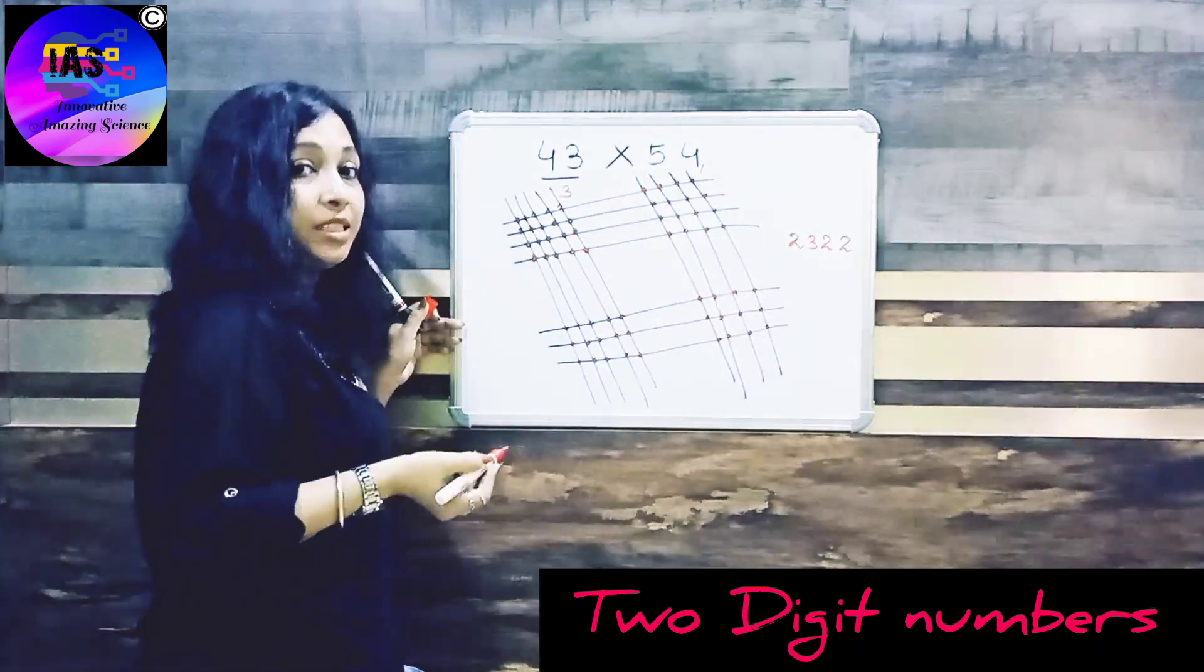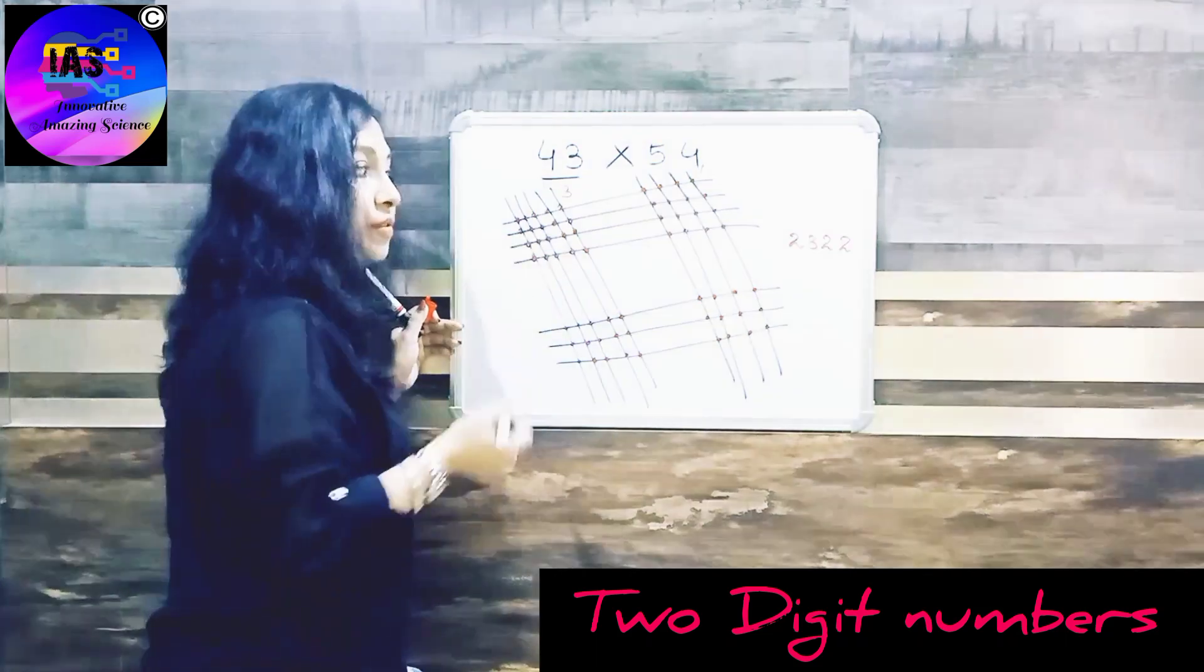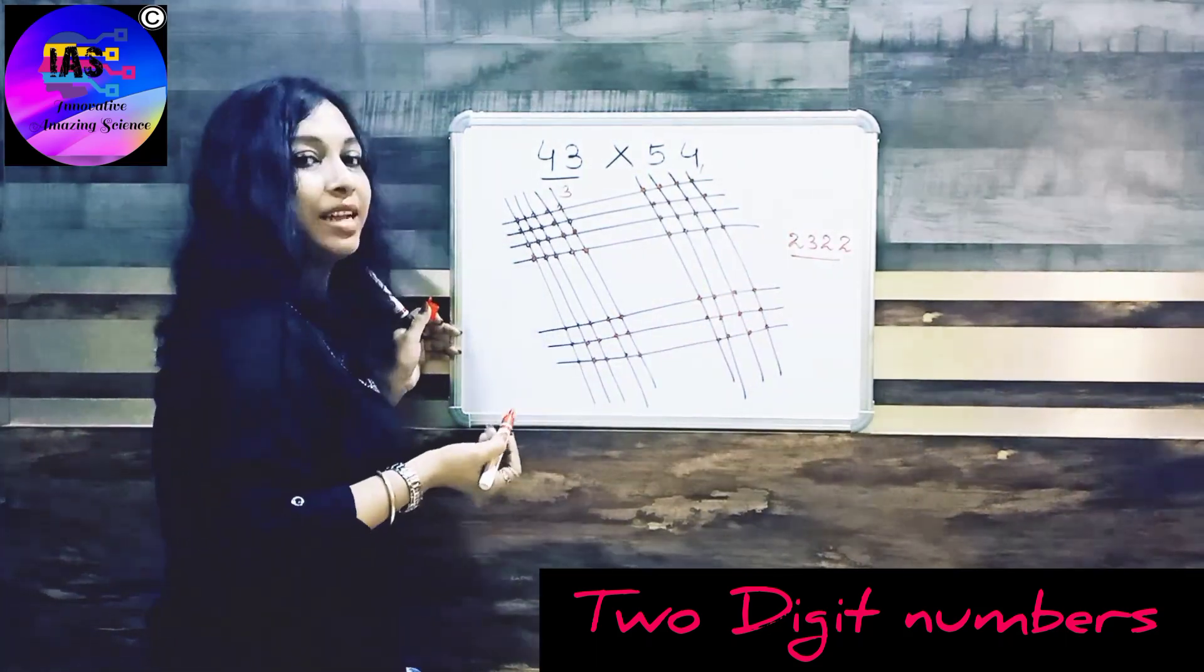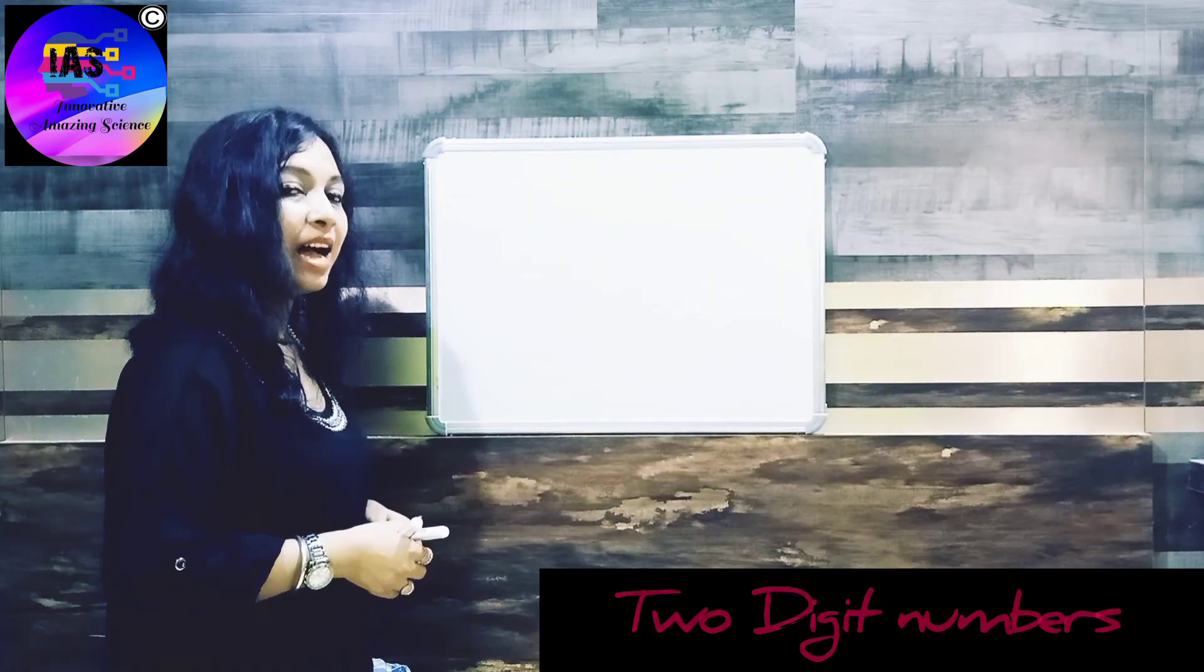So if you multiply 43 into 54, the answer you get is 2322.